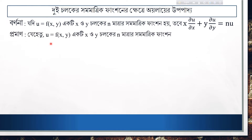u is equal to f of x, y which is homogeneous of degree n. Now we are going to show this is equal to 1.